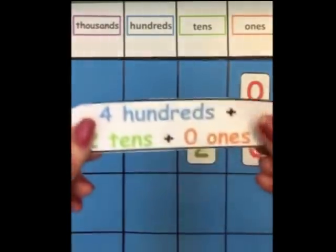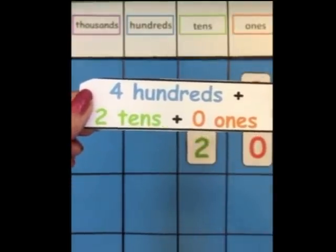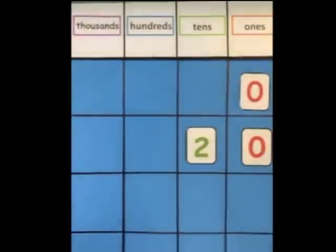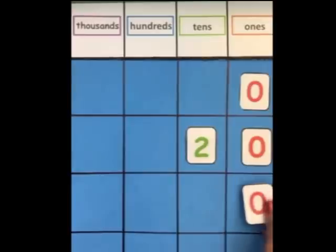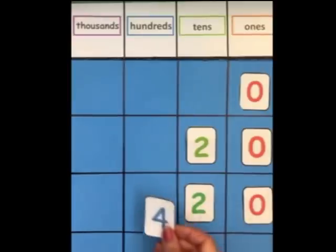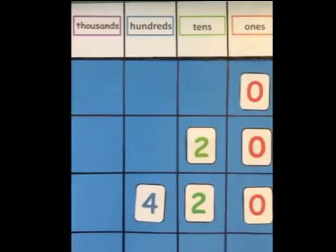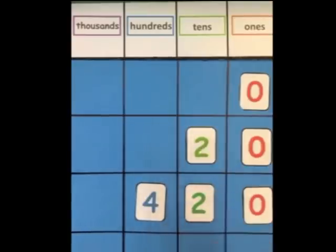Now we go to one with three digits: four hundred plus two tens plus zero ones. The zero goes in the ones column, then the two goes in the tens, and the four goes in the hundreds. So now we have 420, represented by a four in the hundreds, a two in the tens, and a zero in the ones.